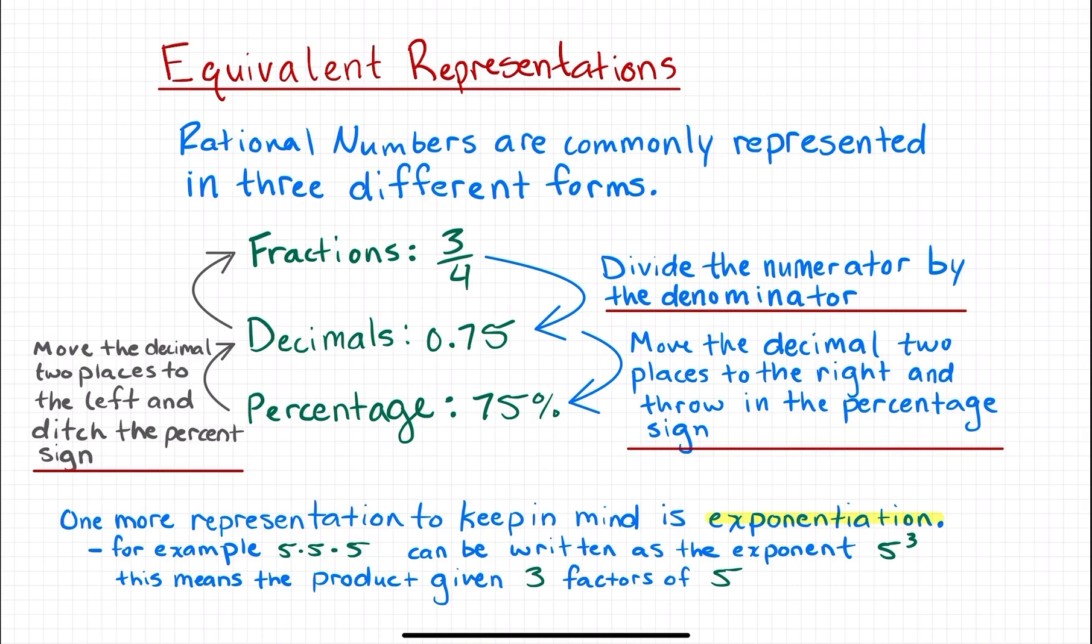So 0.75, I moved that decimal two places to the right. The decimal goes away if there's nothing more to the right of it, and then I add the percentage sign. So 0.75 is equivalent to 75%.